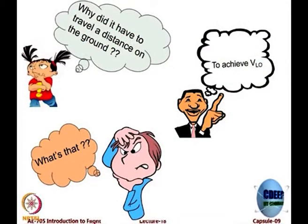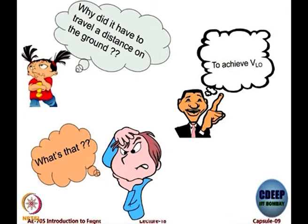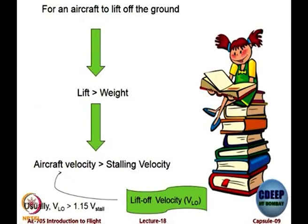The question is: what is the need for the aircraft to travel some distance on the ground? Why did it not just lift off the ground? That is because it has to achieve a particular speed called VLOF (lift-off speed). This speed is required to achieve a condition by which you can leave the ground — specifically, that lift must be more than weight — and to get that, velocity must be more than the stalling velocity.